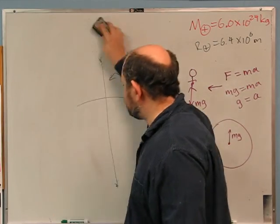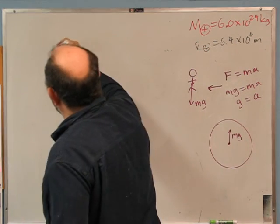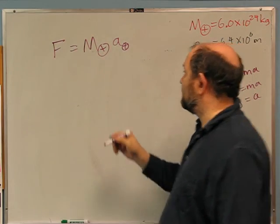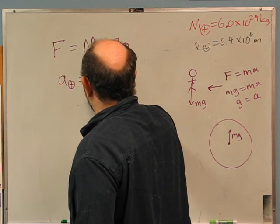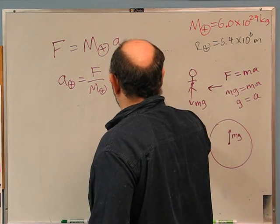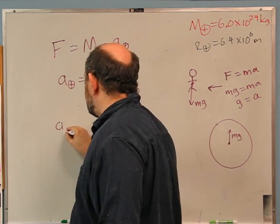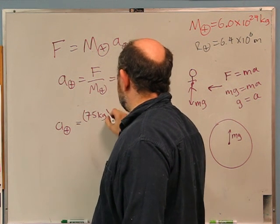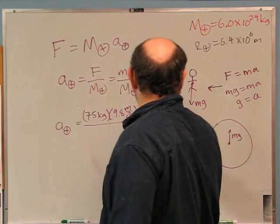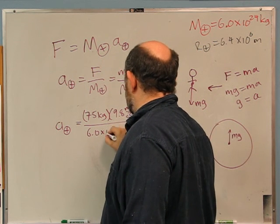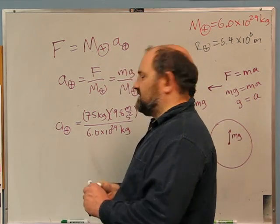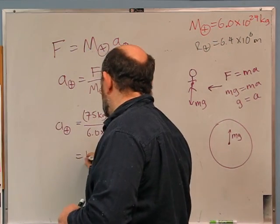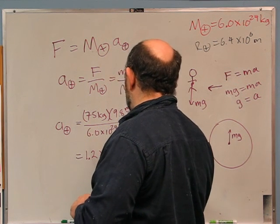Plugging in numbers: your mass is about 75 kg, g = 9.8 m/s², and the mass of the Earth is 6.0 × 10²⁴ kg. So a_Earth = (75 × 9.8) / (6.0 × 10²⁴), which gives approximately 1.2 × 10⁻²² meters per second squared. That is very small.